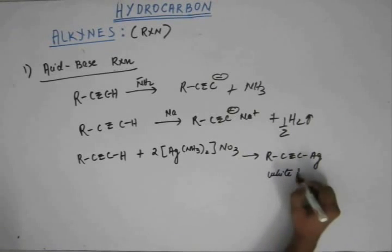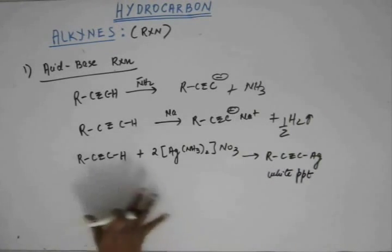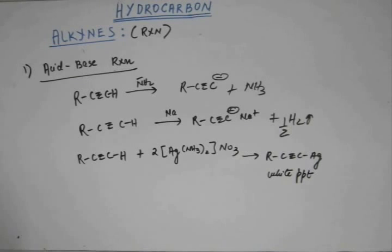This is a white PPT. So when you add ammoniacal silver nitrate to a terminal hydrogen, you will get a white PPT.